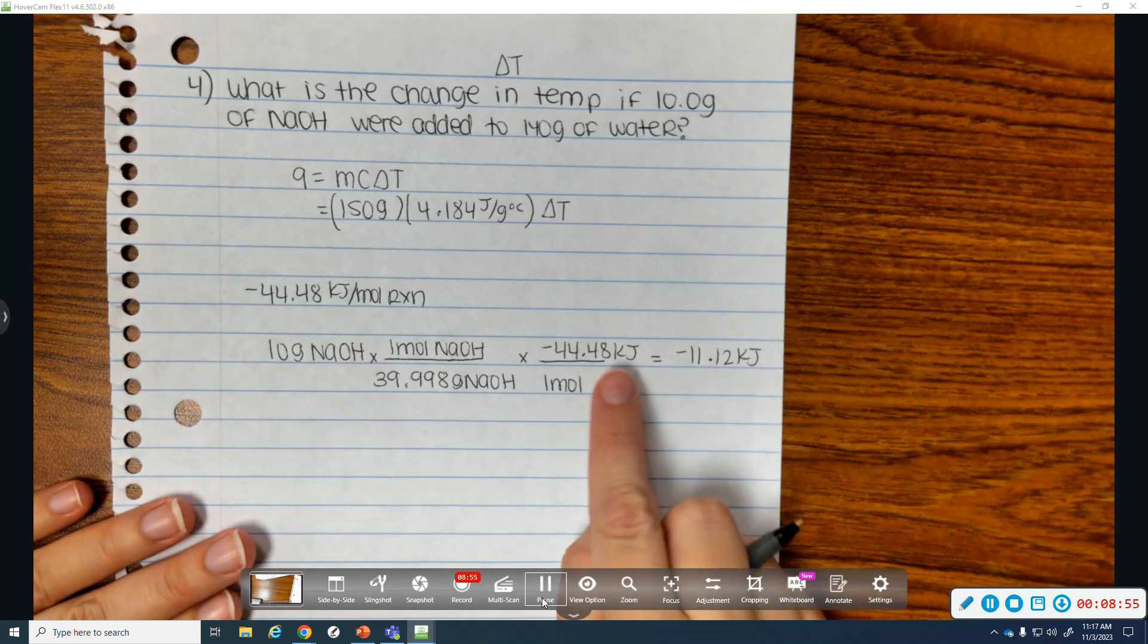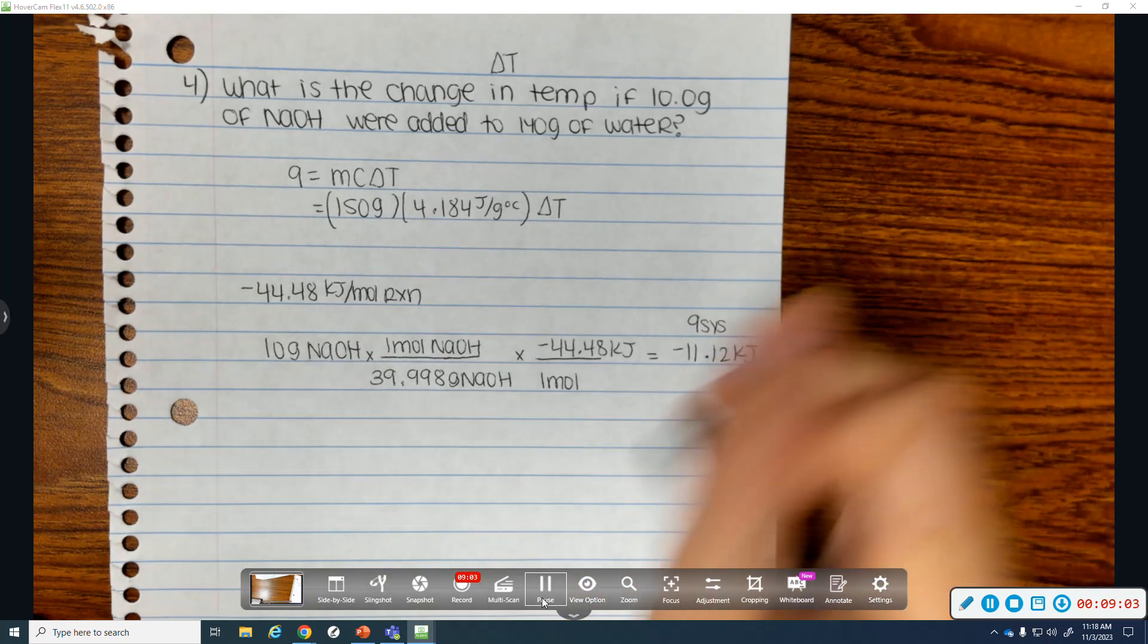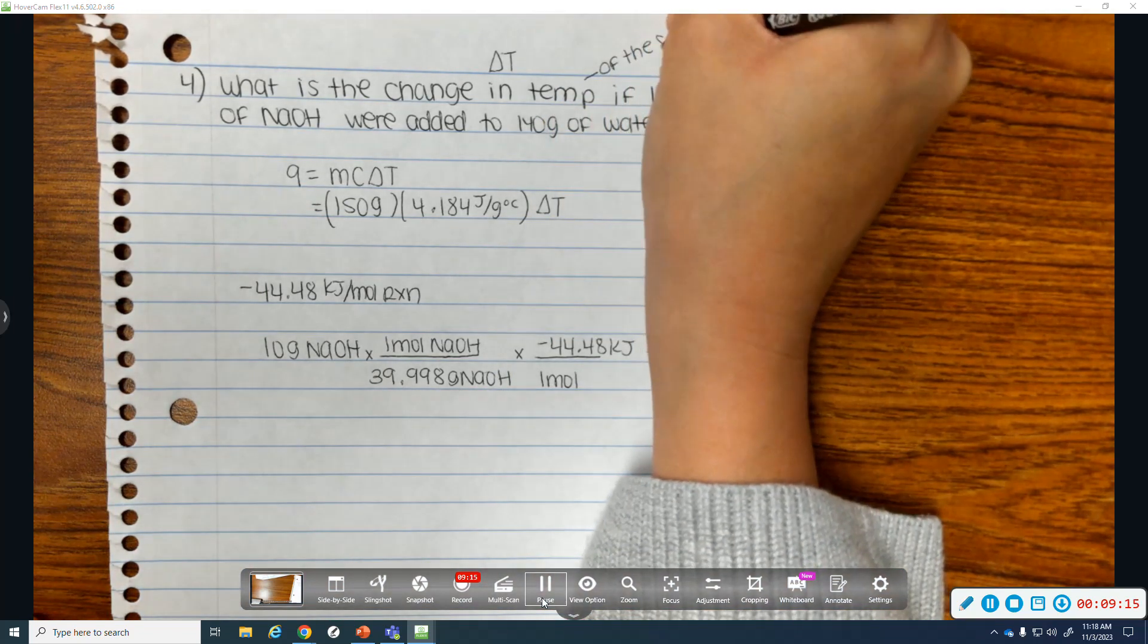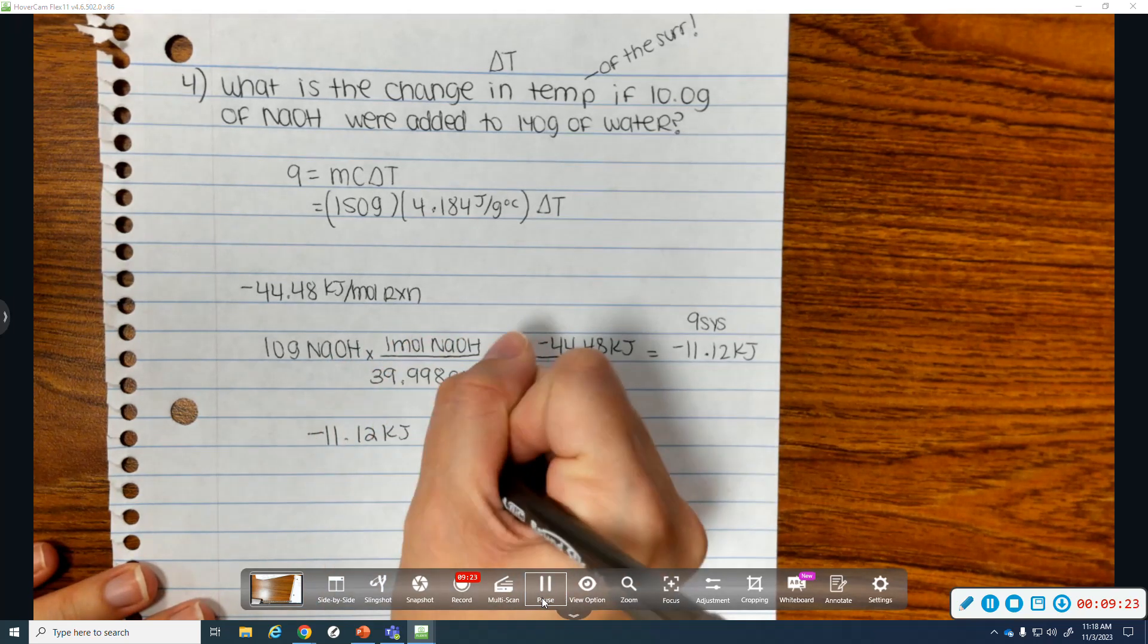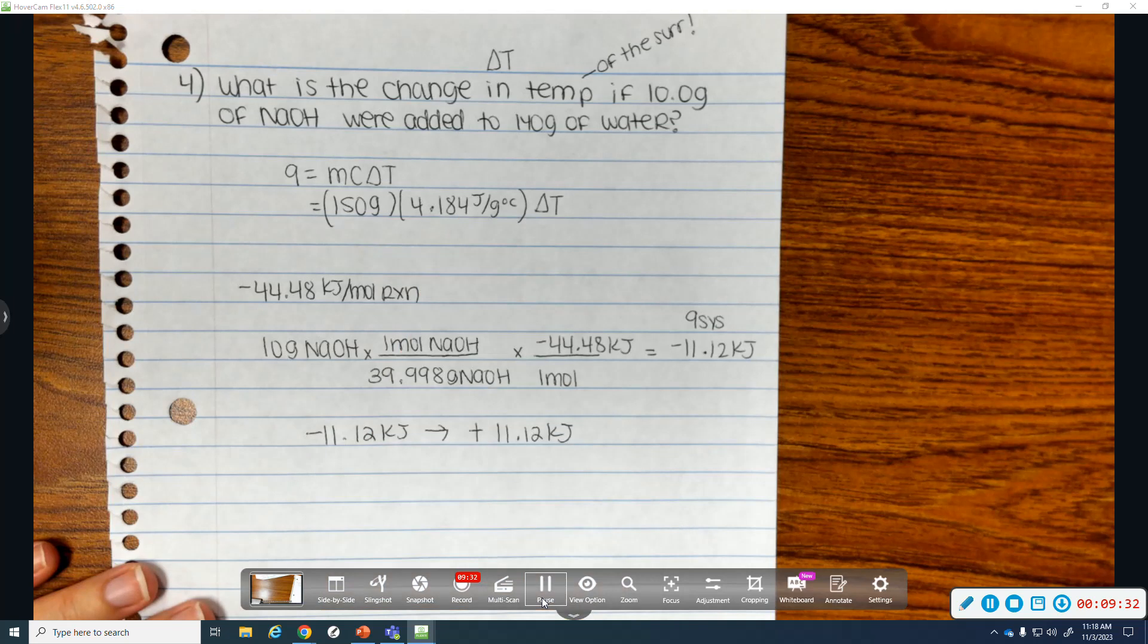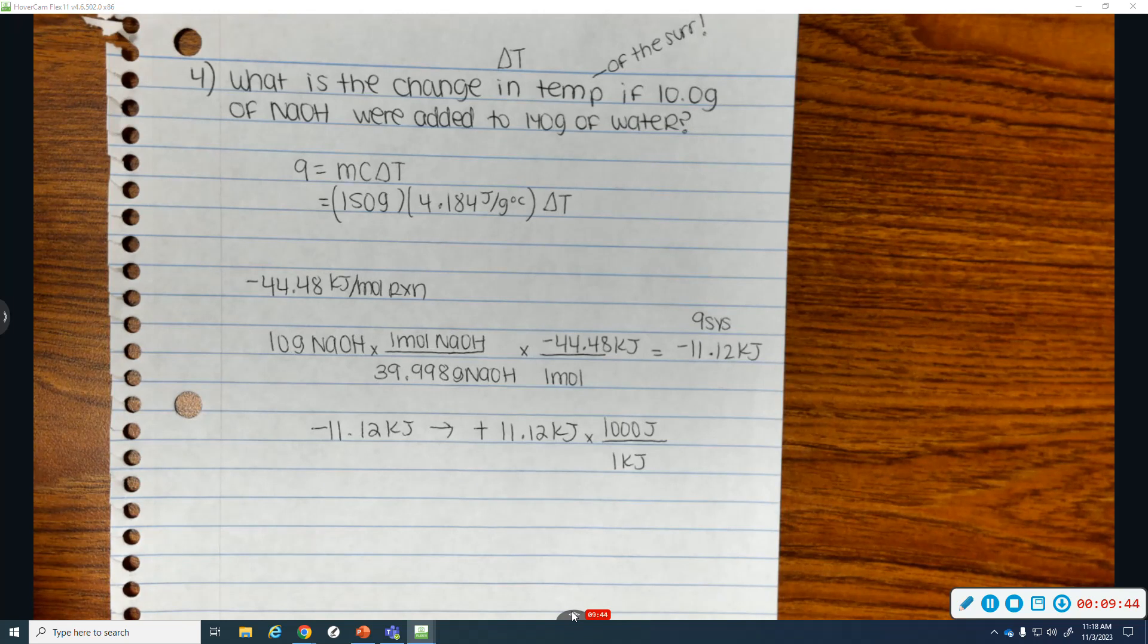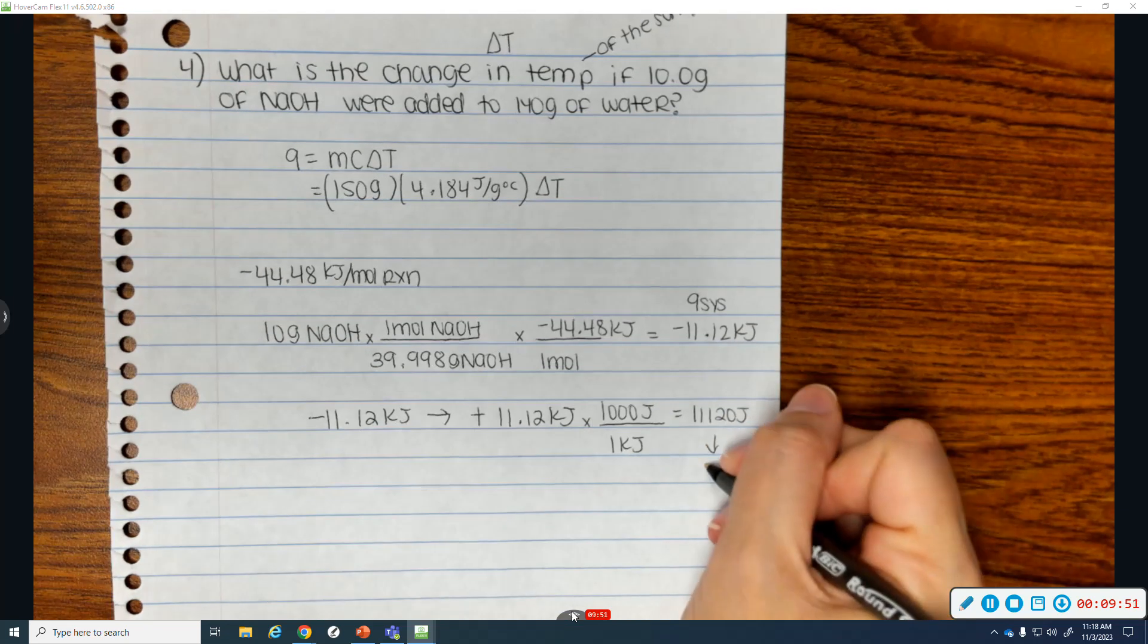Now, just like before, this is, because this is my enthalpy for sodium hydroxide dissolving in water, that is the Q for my system, my NaOH. In your MCAT, you always use Q of the surroundings because I want change in temperature of the surroundings. So just like before, I'm going to take this, and we have to flip the sign. So it's a positive 1.12 kilojoules, and it has to become joules because the specific heat of water is in joules. And so to go from kilojoules to joules, it's 1 kilojoule has 1,000 joules. So that would be 1,120 joules. So that is the Q of your surroundings.